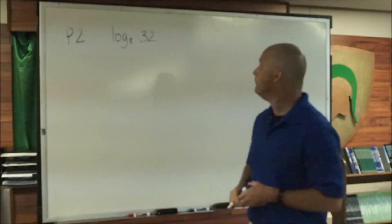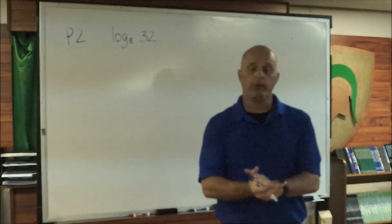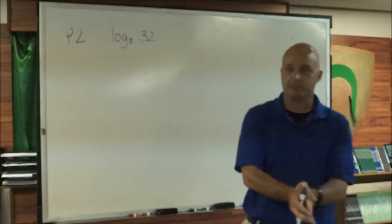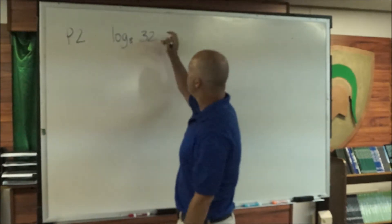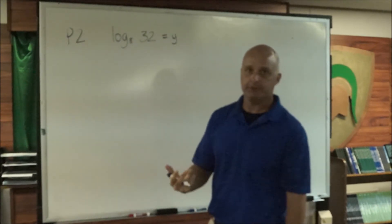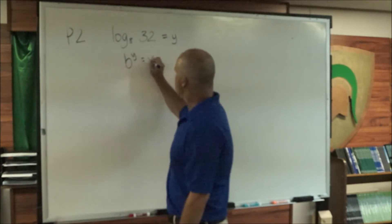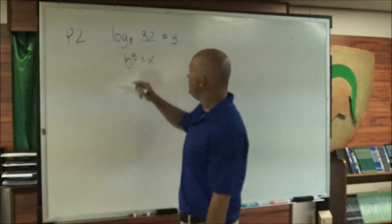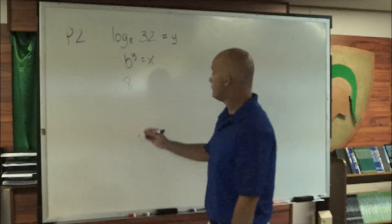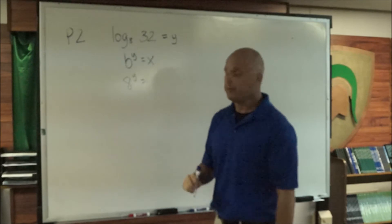Here in problem 2, we're asked to solve what is log base 8 of 32. What we want to do is convert this from a logarithm over to exponential form. So this is log base 8 of 32 equals y. Turning this into exponential form, we go b to the y equals x. The base is 8, the exponent is y — what we're solving for — and x is equal to 32.